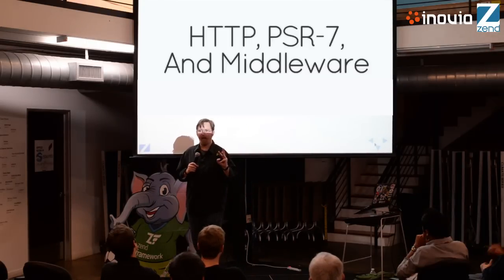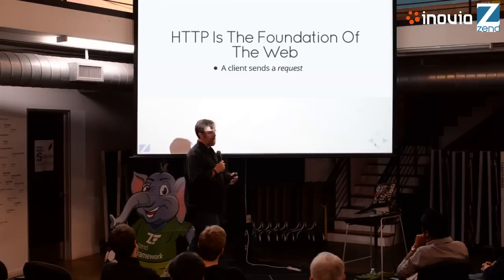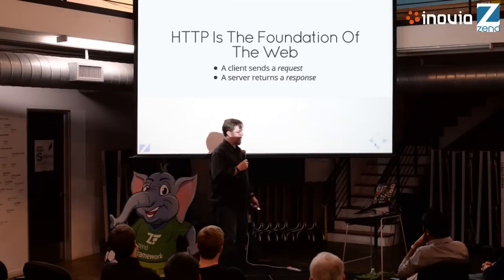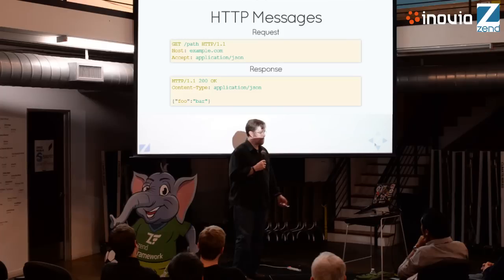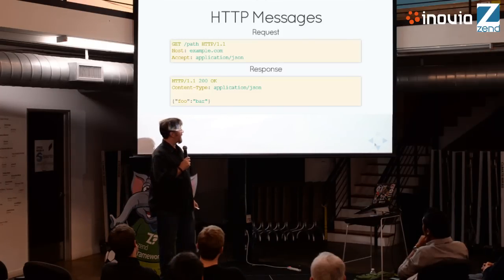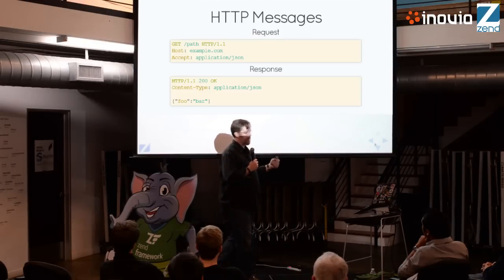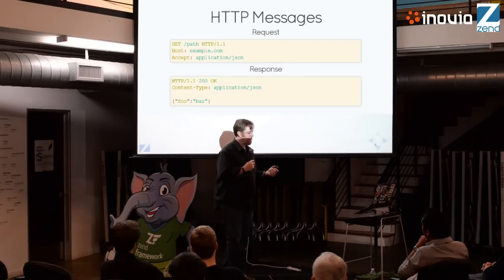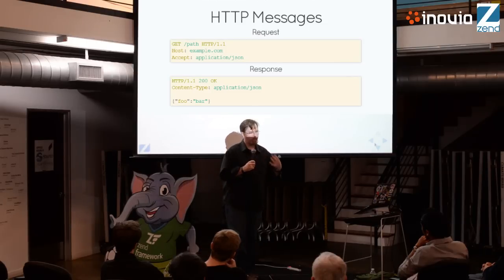The next topic is HTTP, PSR-7, and middleware. HTTP is the foundation of the web — the protocol by which everything is transferred. A client sends a request; you on the server side send a response. These are called messages. A request message has the request line with the request method, a target, and protocol version, followed by one or more headers as key-value pairs, and optionally a body. A response starts with the protocol version, status code, and reason phrase — the status line — then headers and message body.